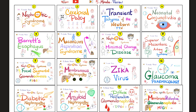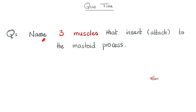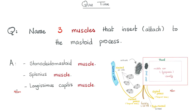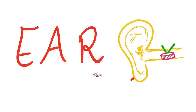Please watch the videos in this playlist in order. First, let's answer the question of the previous video: name three muscles that attach to the mastoid process of the temporal bone. These muscles are sternocleidomastoid, splenius, and longissimus capitis.